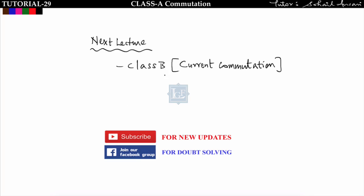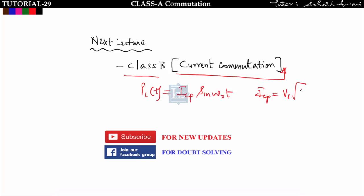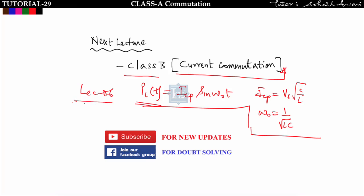In the next lecture we will start Class B commutation, that is current commutation. Before that, go through lecture number 6 where I derived iL(t) = Icp·sin(ω₀t), where Icp = Vs√(C/L) and ω₀ = 1/√(LC) for a discharging LC circuit. Please go through lecture 6 before starting Class B commutation. If you understood the concept, please like this video and subscribe to the channel.